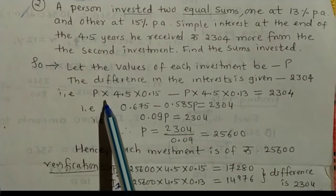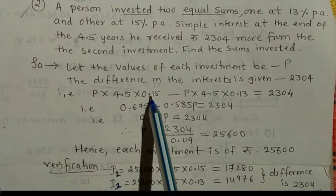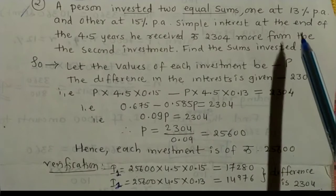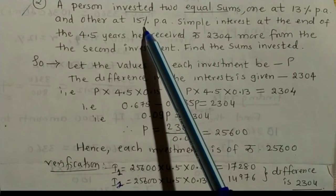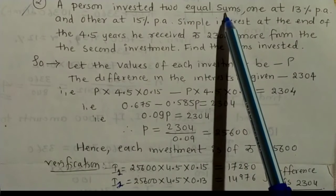In first case, 4.5 into 0.15, and in second case, 4.5 into 0.13. So that is first case 13% and second case 15%. Two equal sums are given.